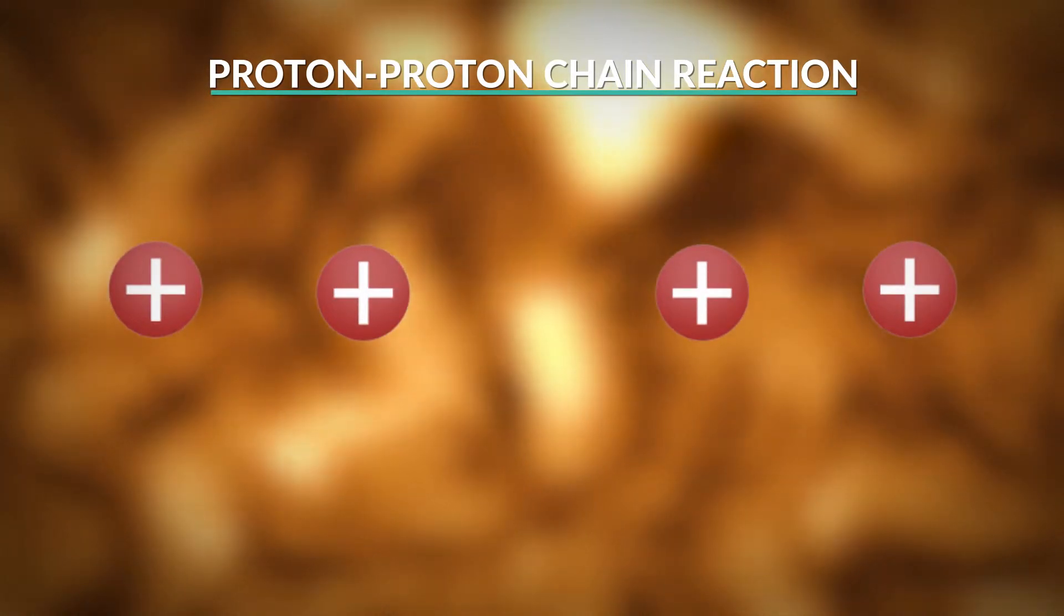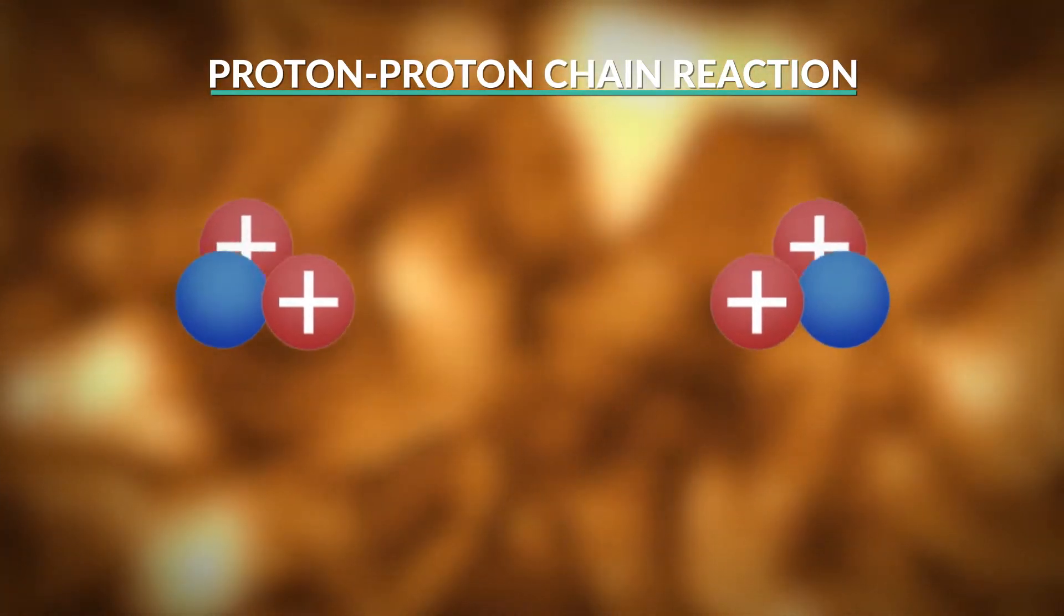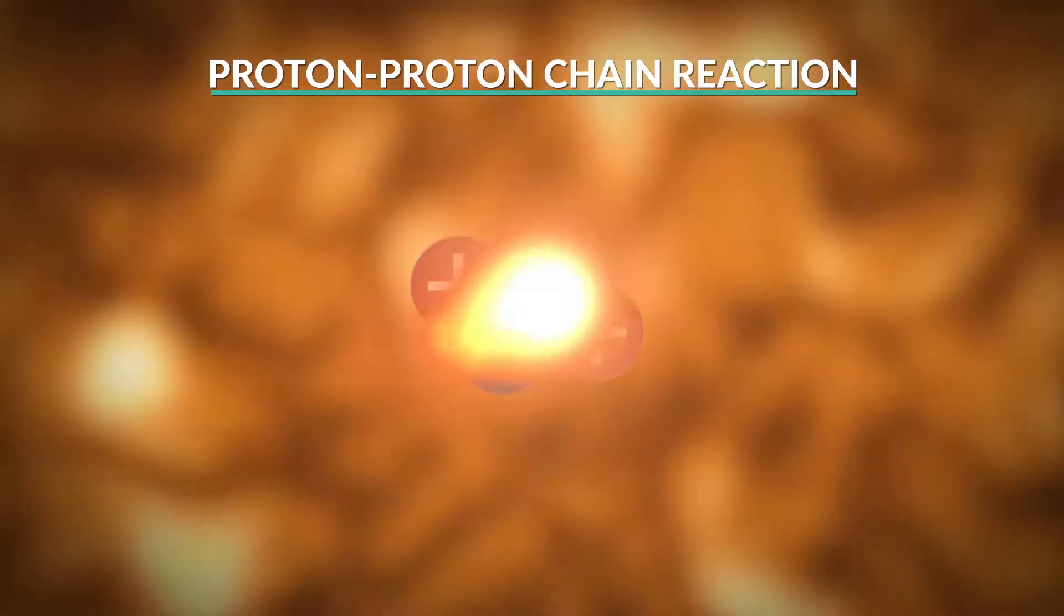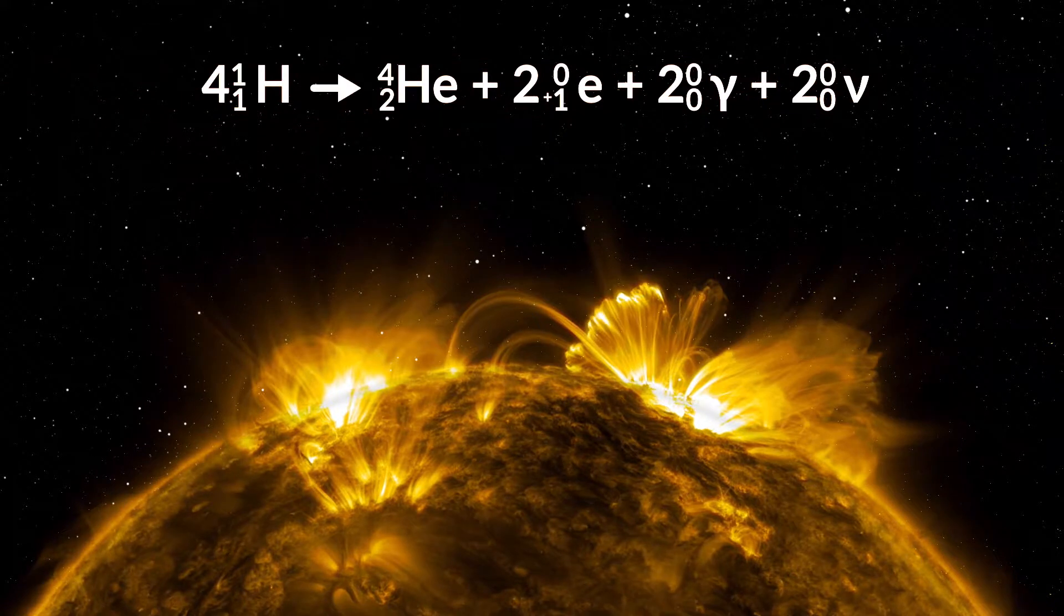This process happens again and again, ultimately causing four hydrogen nuclei to fuse together to finally form a stable helium nucleus and some byproducts. Here's the equation to show nuclear fusion in stars.